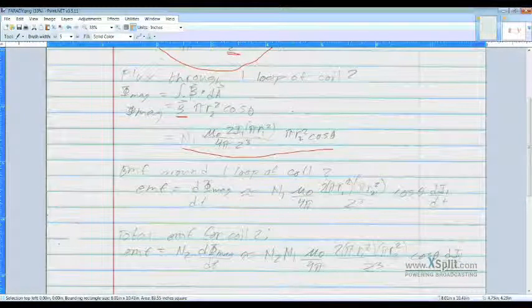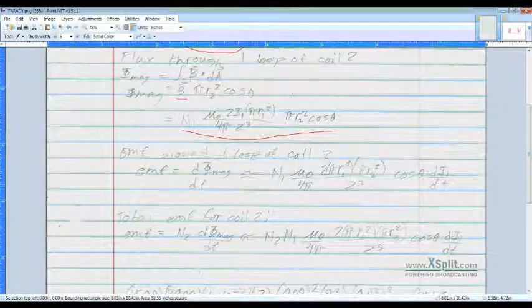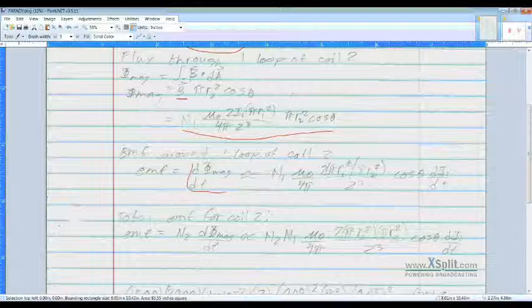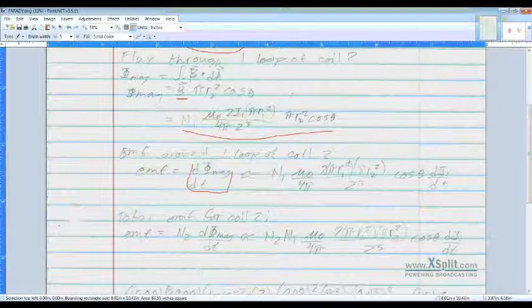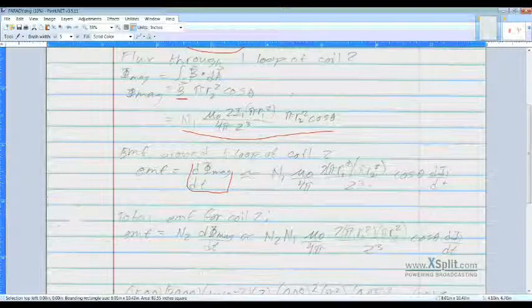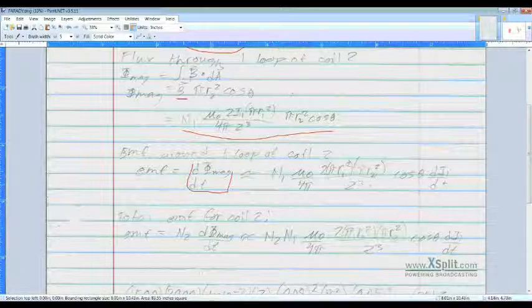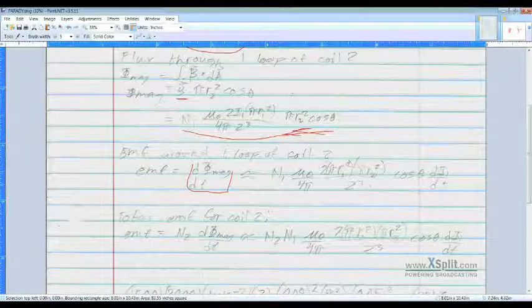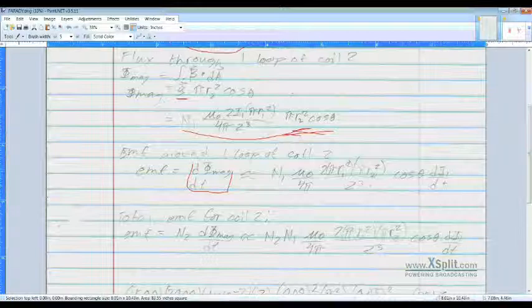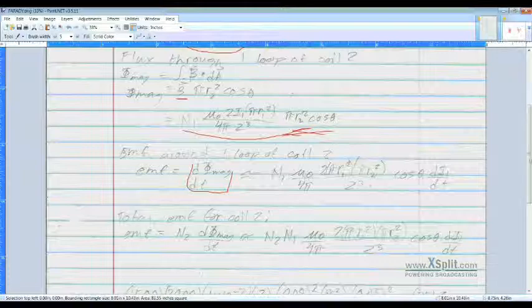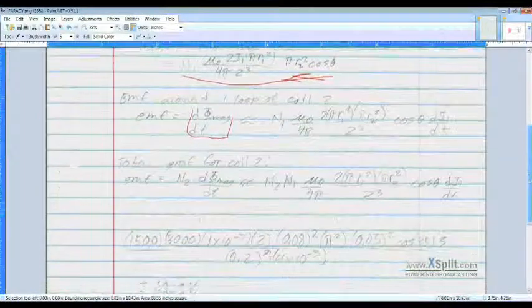We know that EMF is equal to the change in magnetic flux over the change in time. And that'll be approximately the same thing that we found here, that equation, and then we multiply by DI1 over DT, so the change in current over the change in time.